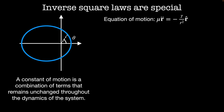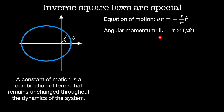The equation of motion for an inverse square law system is given by the reduced mass mu times r-double-dot equal to minus the force constant gamma divided by r squared, and this force acts in the r-hat direction. Since there are no tangential forces in this system, angular momentum must be conserved. The angular momentum L is equal to r cross the momentum, which is mu times the velocity r-dot.